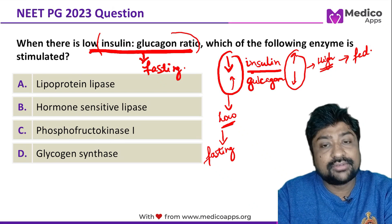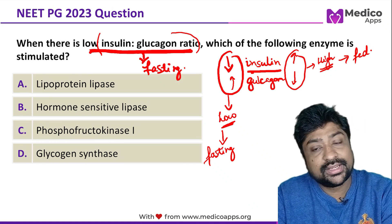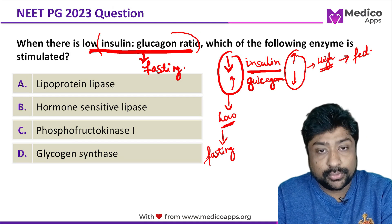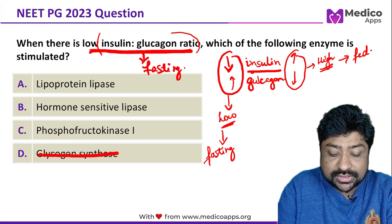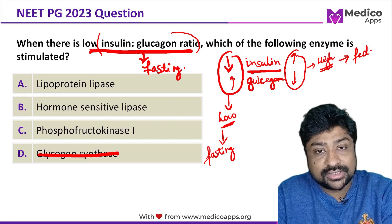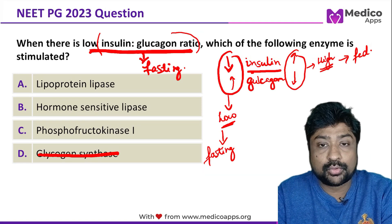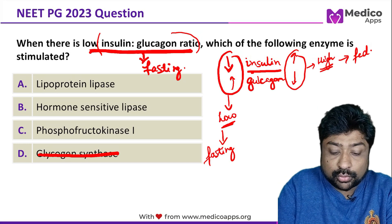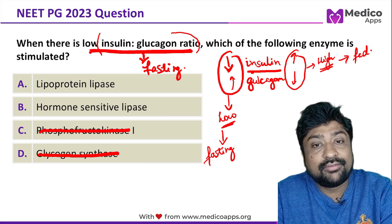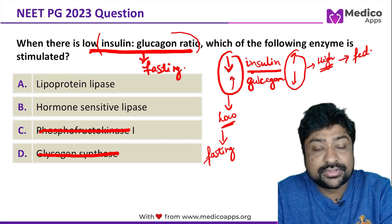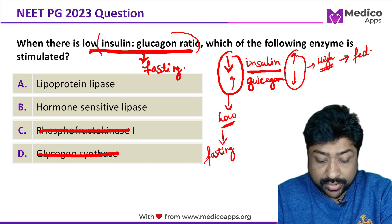If the body is in the fasting state, we ask which enzyme will be stimulated. We can rule out glycogen synthase because glycogen synthase is active when there is more glucose in the body. Phosphofructokinase 1 is the main regulatory enzyme for glycolysis, and glycolysis is favored by insulin — so that is ruled out too.